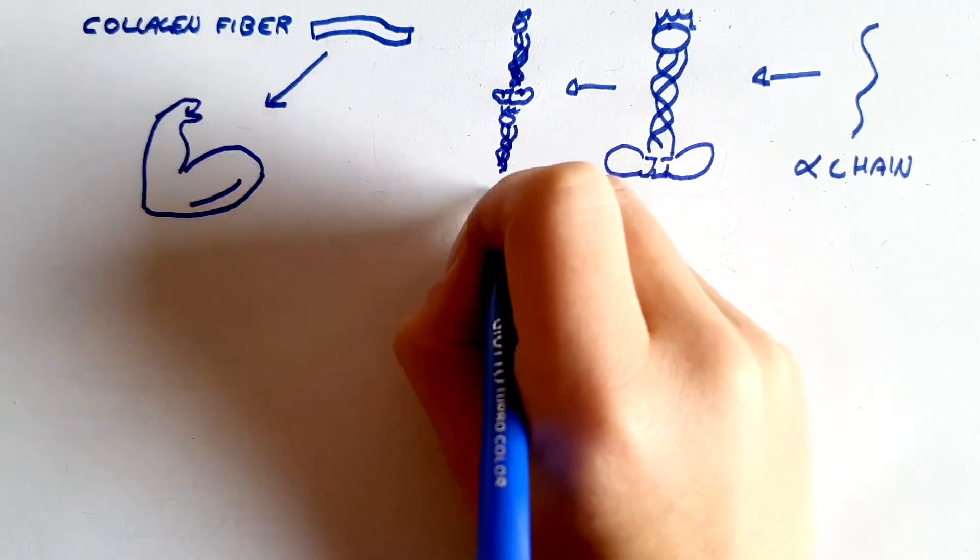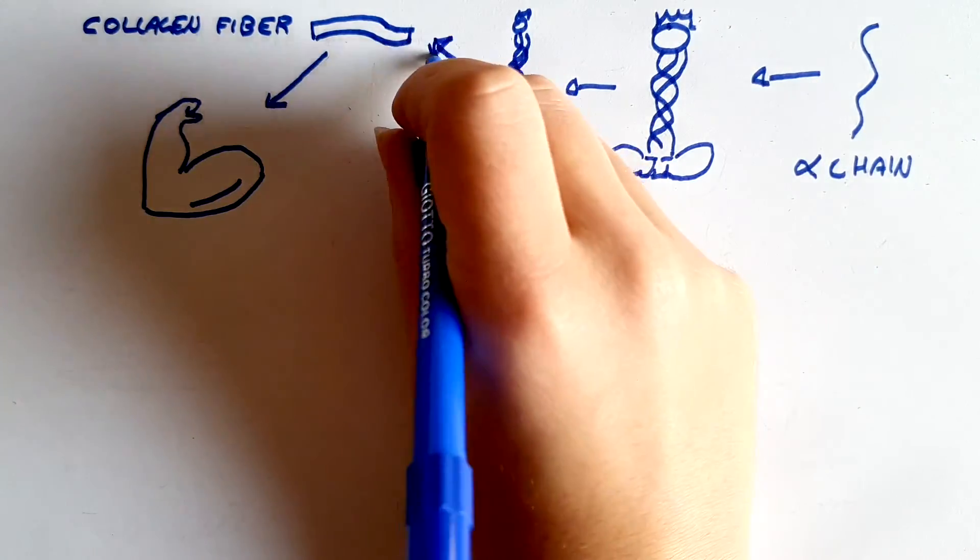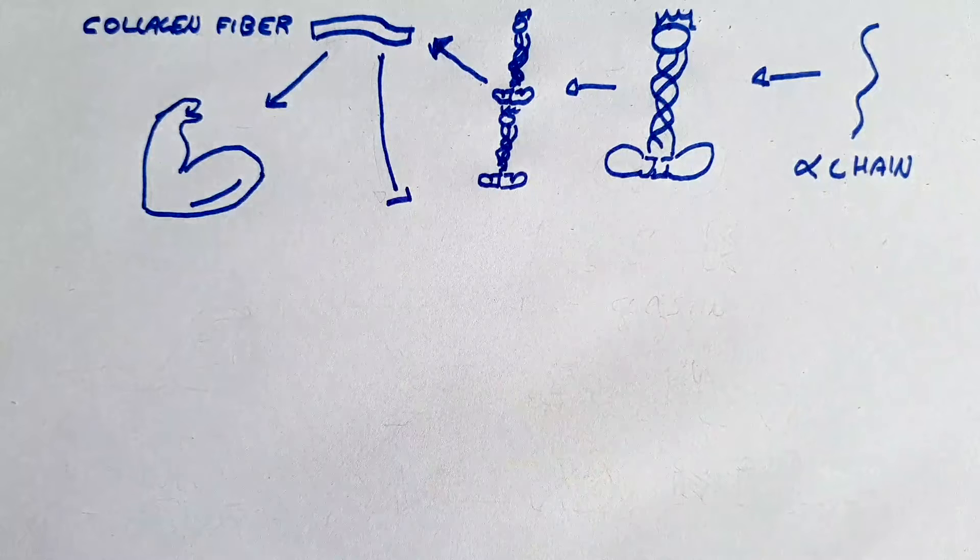Tropocollagen is then exported through the cell membrane and afterward combines spontaneously in a head-to-tail fashion to form microfibrils that organize in fibrils.